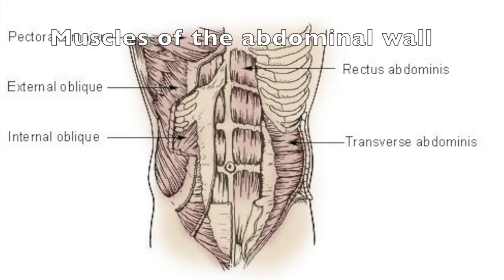The fibers of the rectus abdominis run vertically, whereas the fibers of the transverse abdominis run horizontally. With the oblique muscles, they run diagonally. One trick to remember which muscles are the external and which are the internal is to look at which way the fibers run.